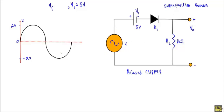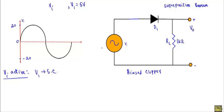Using the superposition theorem, I will keep vi active first - in that case I replace the bias voltage V1 with a short circuit. With V1 replaced by a short circuit, we are considering the effect of input voltage vi only. During the positive half cycle, the positive terminal of the input voltage is connected with the p-side of diode D1 and the n-side is connected with the negative terminal of the input voltage.